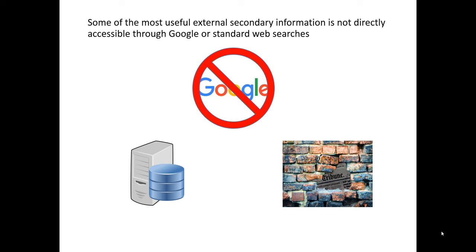However, Googling or standard web searching is almost always inadequate to properly find the most useful secondary information to answer a marketing research question. There are two primary reasons why standard web search tools don't quite get us where we need to be. First, a lot of the secondary information that marketers might want to use is actually stored within some sort of online database where we have to interface with the database itself, deriving queries to extract the information. So we need to know where those secondary databases are and have deep intimate knowledge of what they can provide. Google won't do that for us.